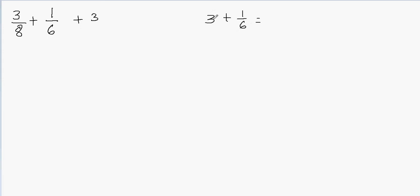So here I have 3 plus 1/6. If I need to combine the whole number and the fraction, I will get the mixed fraction. So 3 plus 1/6 will be equal to 3 1/6. You combine the fraction with the whole number and get the mixed fraction. So I'm going to replace 1/6 plus 3 with 3 1/6, and write 3/8 plus 3 1/6.